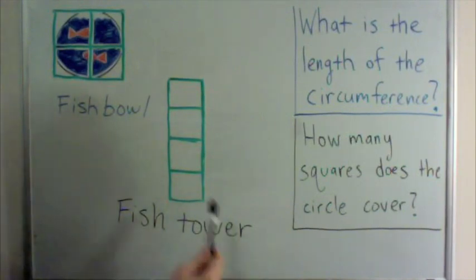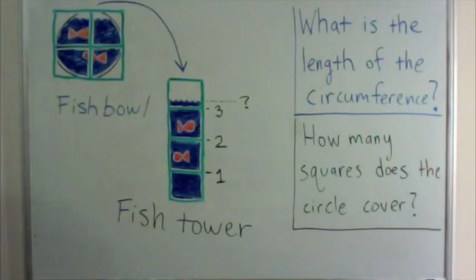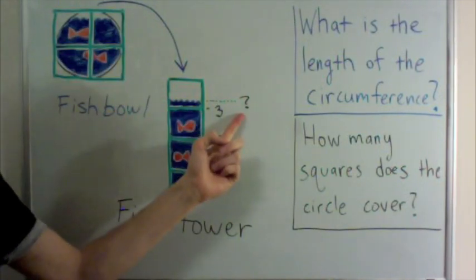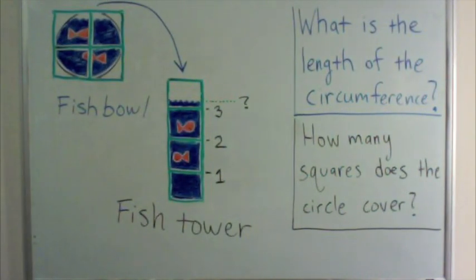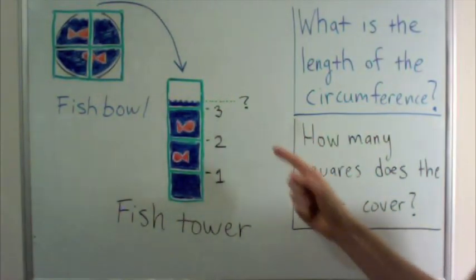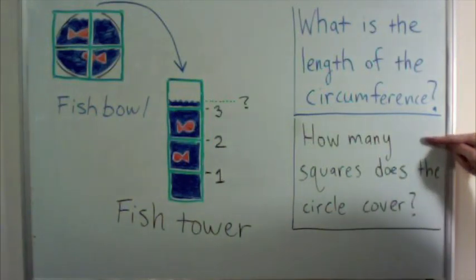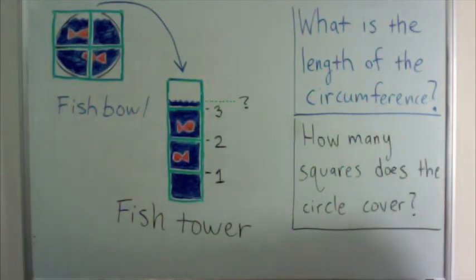Now, I build a fish tower using the same four squares. If I pour all the water from the fishbowl into the fish tower, how high will the water go? It turns out that the height of the water in the tower is the same as the number of squares covered by the circle. So you can think of this question either way. It has the same answer.